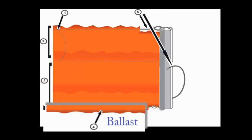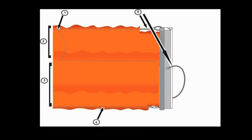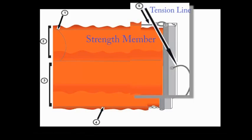Four, the ballast is the weight at the bottom of the skirt keeping boom hanging vertically. And number five, the tension line or strength member are the cables, chains or lines of the boom.